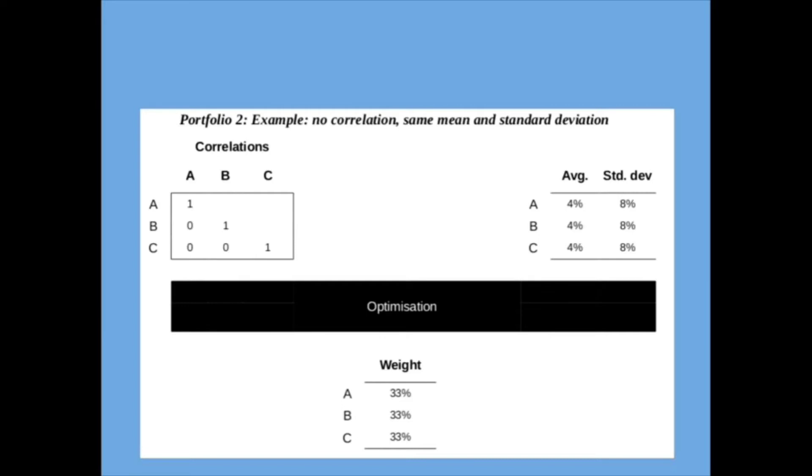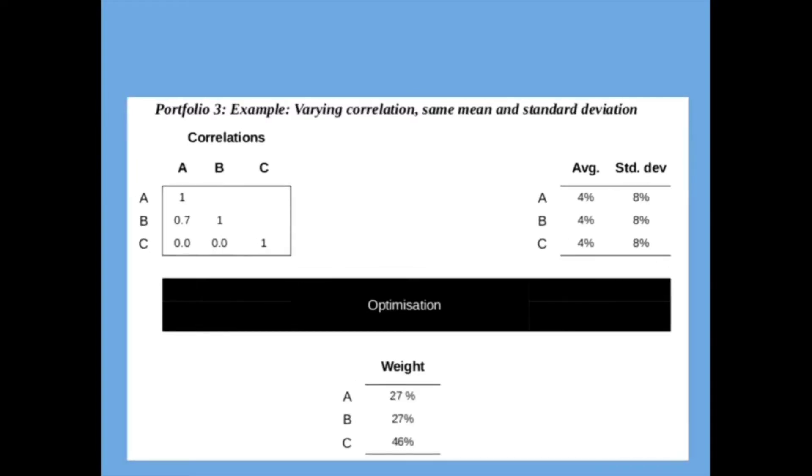And the interesting thing is that this produces the same results, even if you have assets with different correlations. So here we've got three assets have all got correlations of zero. So they're very different assets indeed, but the same mean and the same standard deviation. Again, the optimization says, I can't really choose between these things. They're all pretty similar.